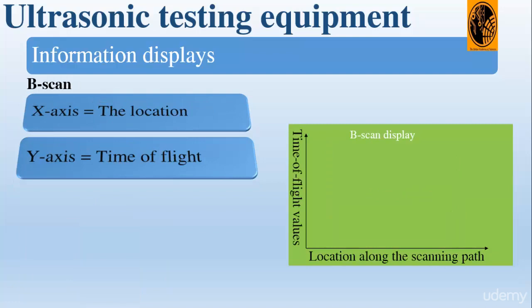The second method is the B-scan. With the ultrasonic B-scan, the test object is scanned along one axis to produce a presentation of its cross-section. The location along the scanning path is shown on the x-axis and the time of flight values are shown along the y-axis.